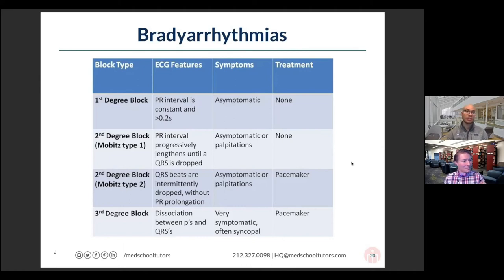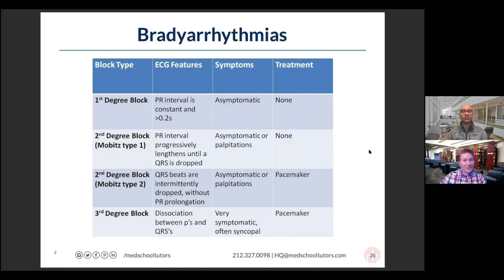In third degree heart block, the P waves do whatever they want, and the ventricles fire on their own — off the leash. The ventricles go slower, hence bradyarrhythmia. In first degree AV block you maintain the rule: P before every QRS. In second and third degree, things break down. A pacemaker is needed for third degree, and also for second degree type II since it randomly converts to third degree.